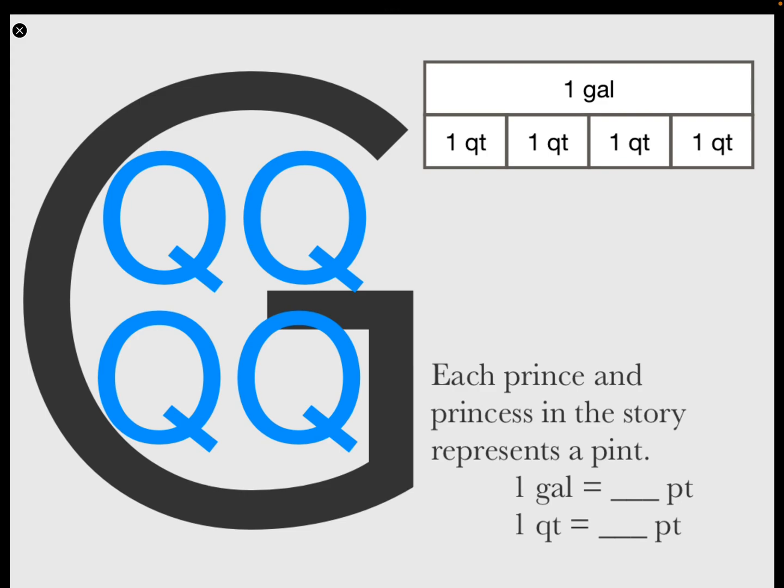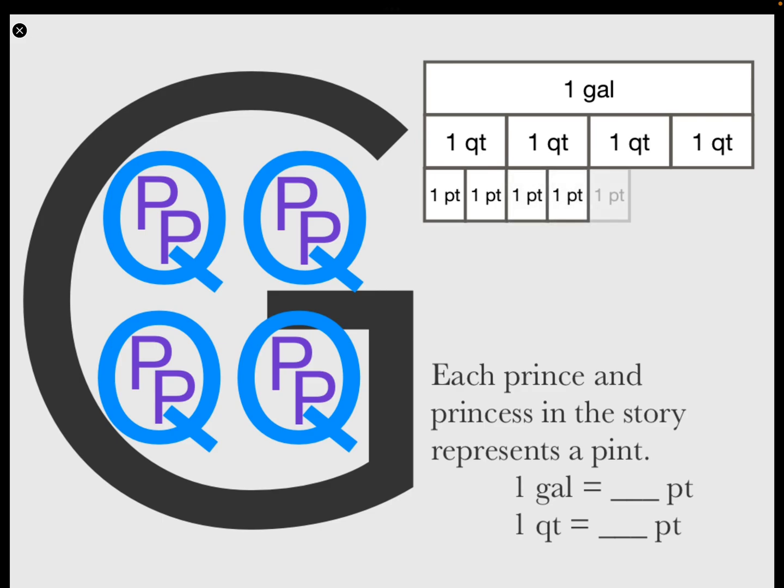Each prince and princess in the story represents a pint. One quart equals how many pints? One quart equals two pints.